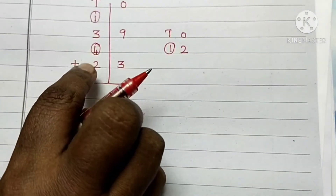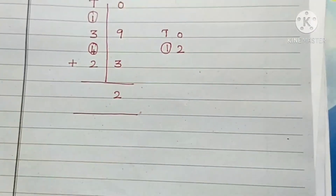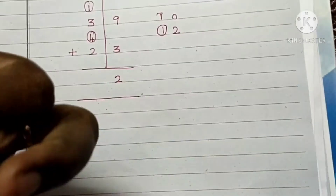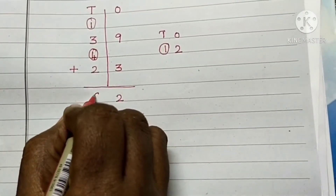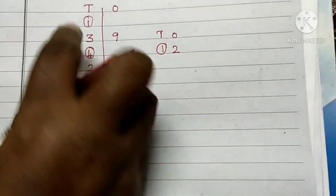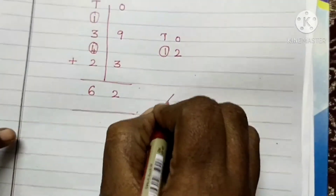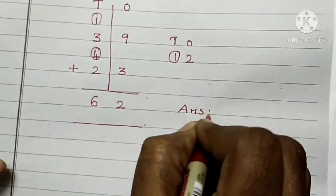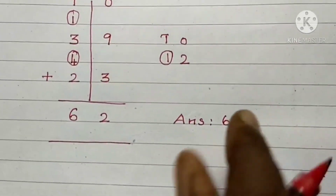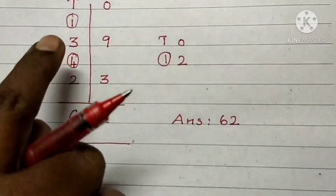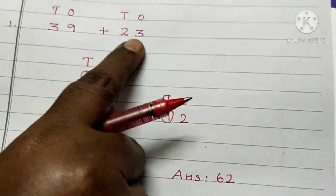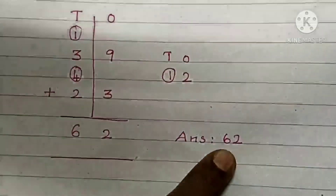4 in the mind, 2 in the fingers. After 4: 5, 6. Write 6 under the 10's column. The answer is 62. The sum of 39 plus 23 is 62.